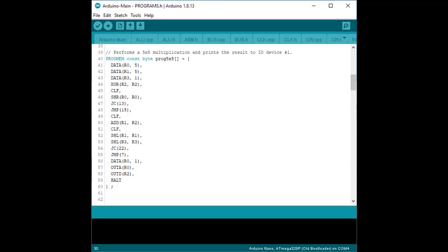The next program performs a five by five multiplication and prints the result to IO device number one. It is similar to a program that you can find on the But How Do It Know website.